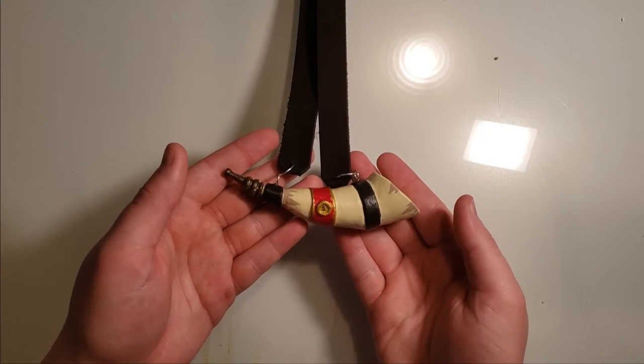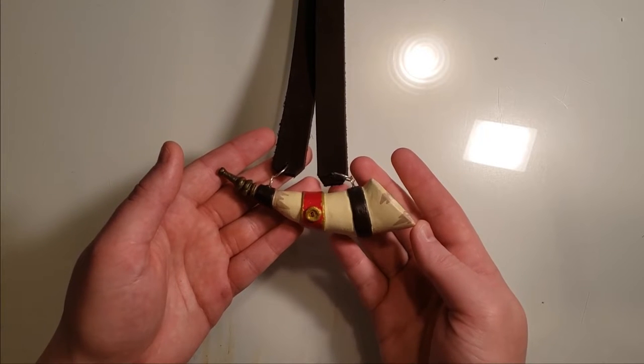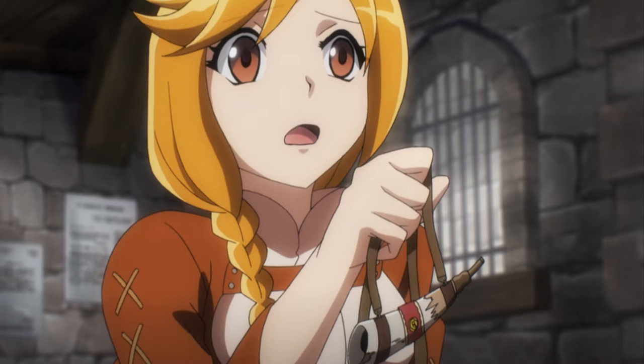Welcome to Kevin Makes Cool Things, I'm Kevin, and this is my 3D printed Horn of the Goblin General, famously used by the fearsome commander Henry Emmott from Overlord.